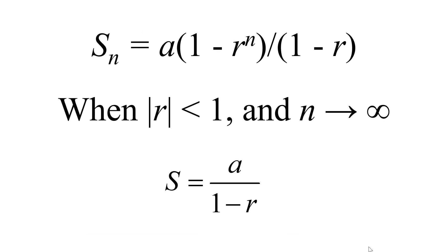To utilize this formula for converting repeating decimals to fractions, we need the formula for the sum of the infinite series. When the absolute value of r is less than 1, the sum of the infinite series becomes S = a / (1 − r), since ar^n approaches 0.